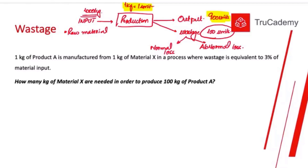Normal loss is what occurs due to natural reasons — for example, evaporation. For water or some chemicals, when we boil them or even at room temperature, some raw material will definitely evaporate during production. This is normal loss because it arises due to natural reasons. How do we identify it? Normal loss occurs in every single production run — it is a loss we incur every time.